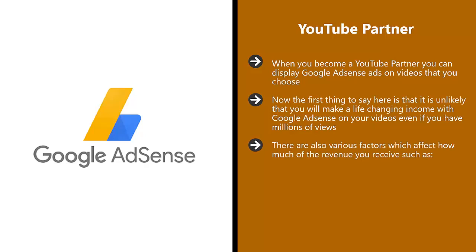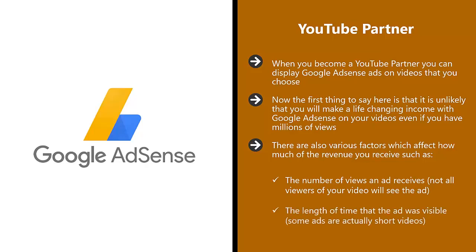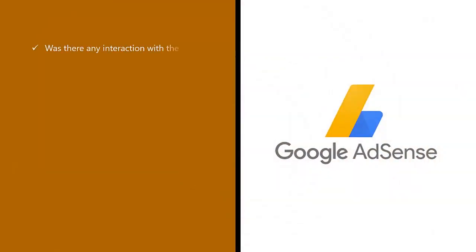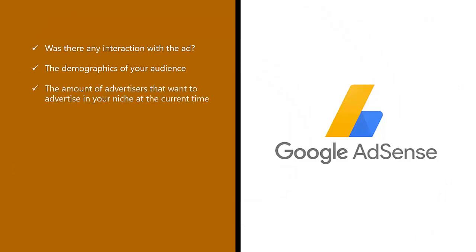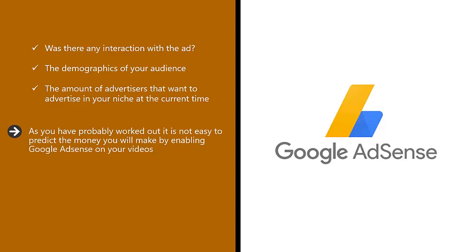There are various factors which affect how much revenue you receive, such as the number of views an ad receives — not all viewers of your video will see the ad — the length of time the ad was visible, whether there was any interaction with the ad, the demographics of your audience, and the number of advertisers wanting to advertise in your niche. It is not easy to predict the money you will make, but you don't have to worry about any of these factors other than trying to get as many views as possible.